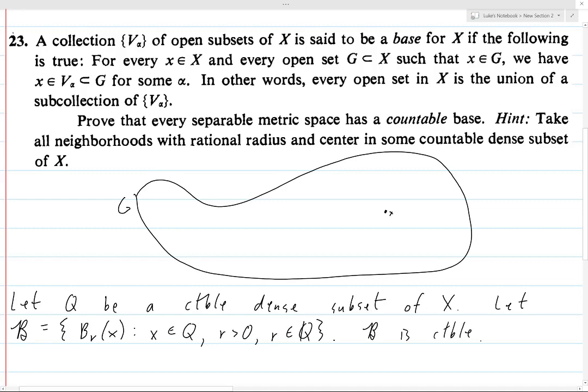Then B is countable. Why is B countable? It's countable because if you look at the collection of balls, what data do you have going into it? You have the radius and you have the center point x. So you can associate each ball with a unique pair (r, x), where r is taken from the rationals and x is taken from C, which is a countable set. The rationals are also countable. So this pair is taken from C cross the rationals, which is a direct product of two countable sets, and thus the direct product is countable. So B is itself a countable set.